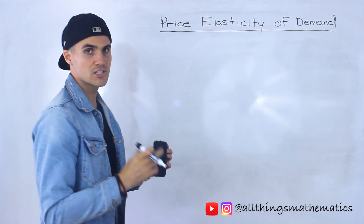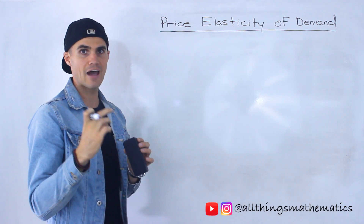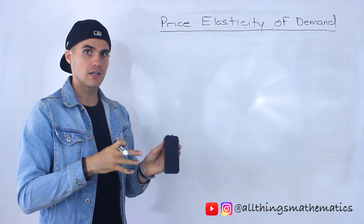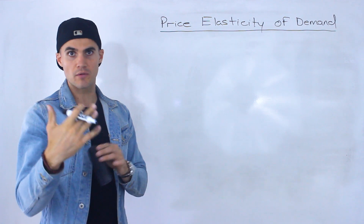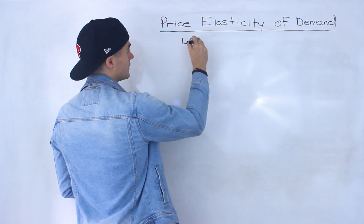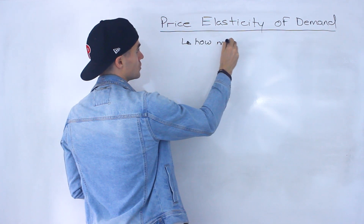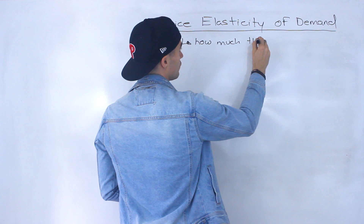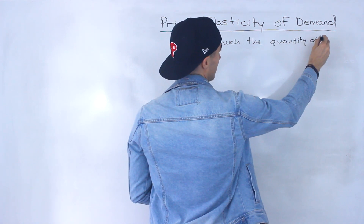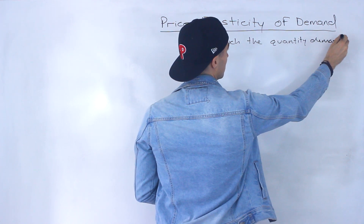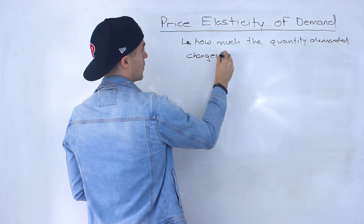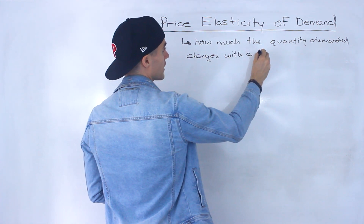So price elasticity of demand — what is it? Well, elasticity in general basically means how sensitive the quantity of a good demanded or supplied changes with a price change. So in terms of demand, it's basically how much the quantity demanded changes with a change in price.